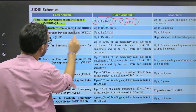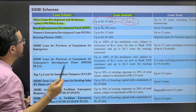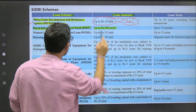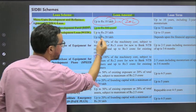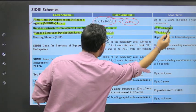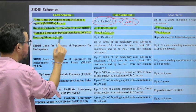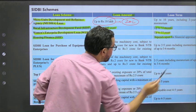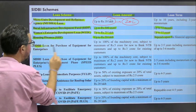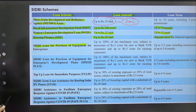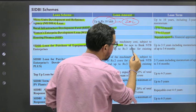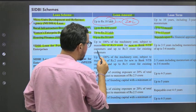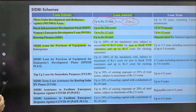The Rural Infrastructure Development Fund - RIDF - comes under NABARD. Women Entrepreneurs Development Loans go up to 25 lakhs for 15 years. Housing Finance goes up to 20 lakhs depending on financial appraisals. For loan for purchase of equipment for enterprise, it is 100% of machinery cost subject to a maximum of 5 crores for new customers, and up to 3 crores for existing customers.